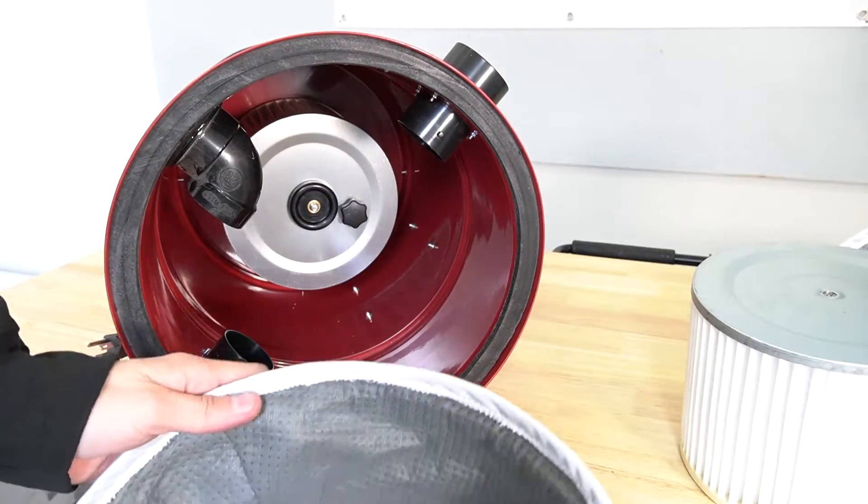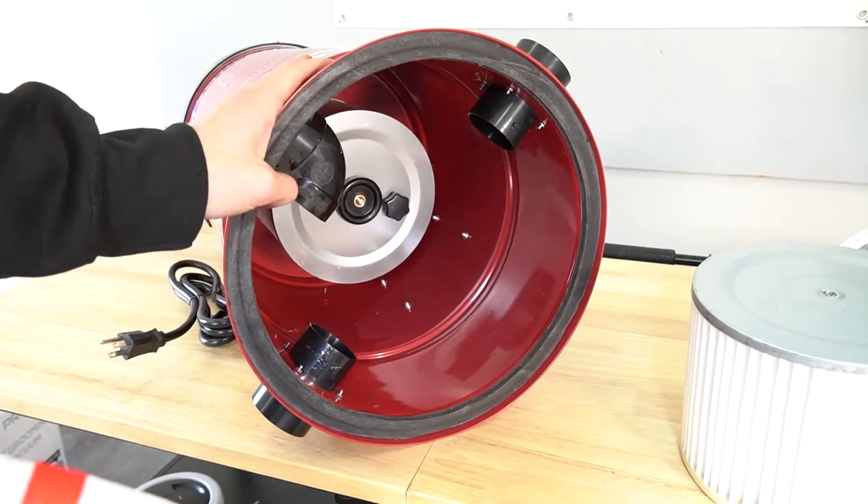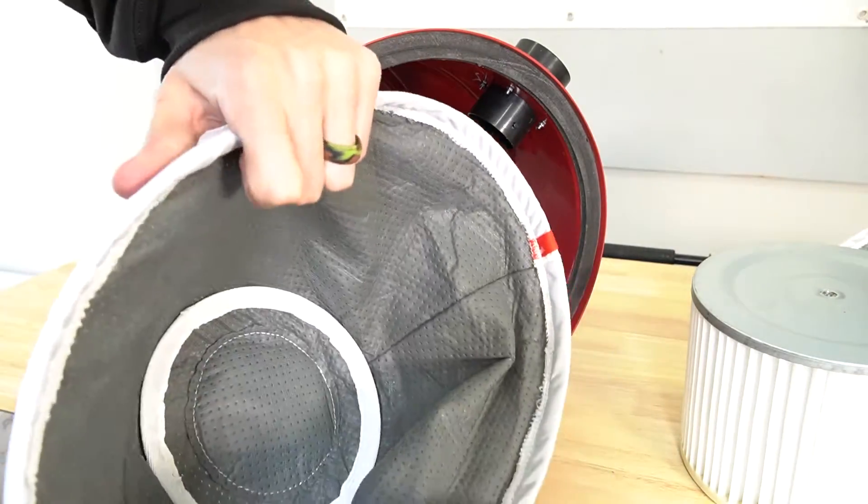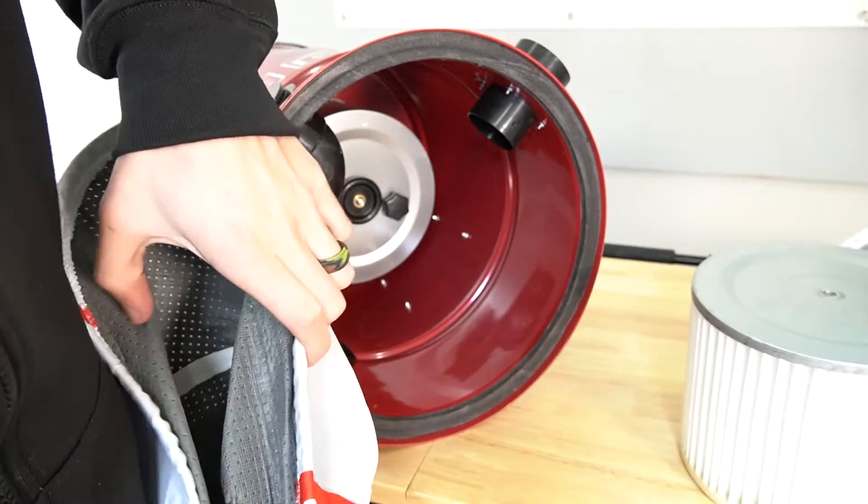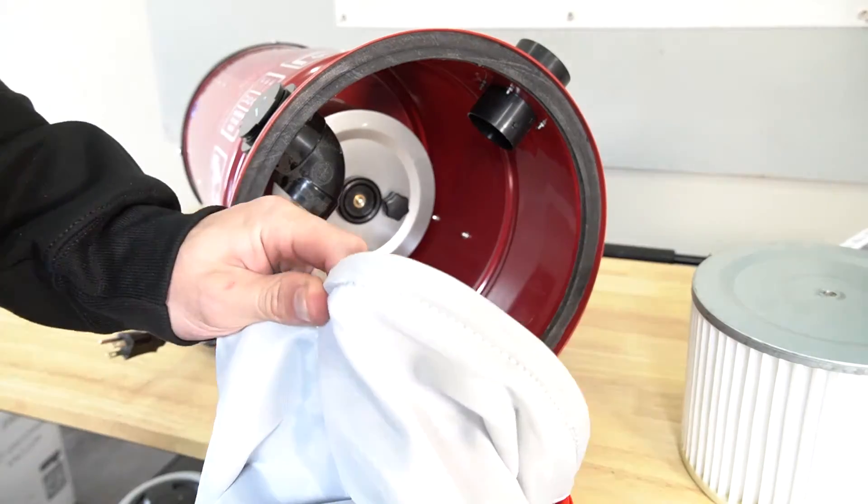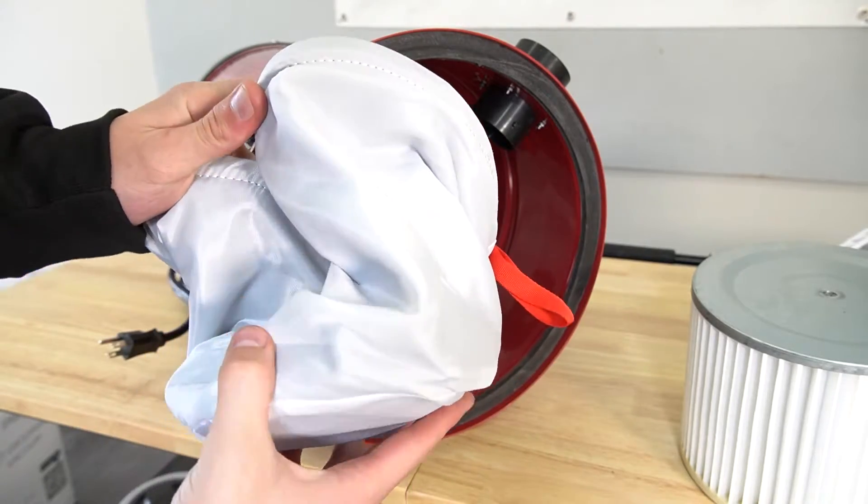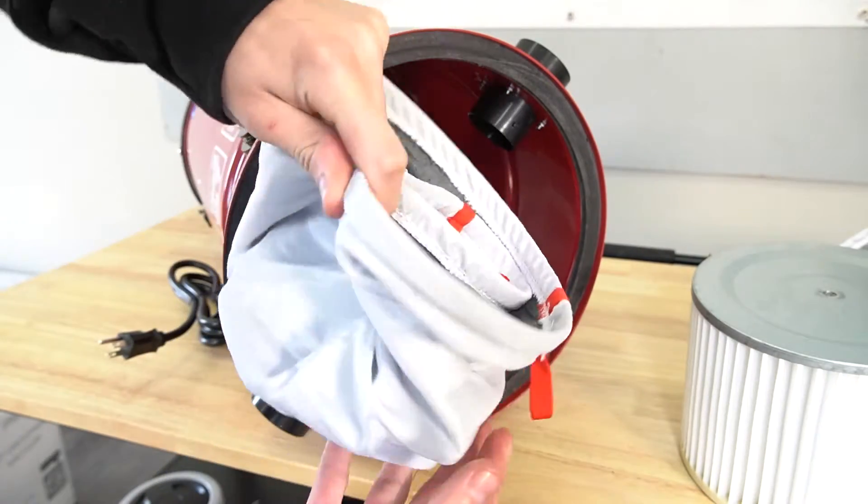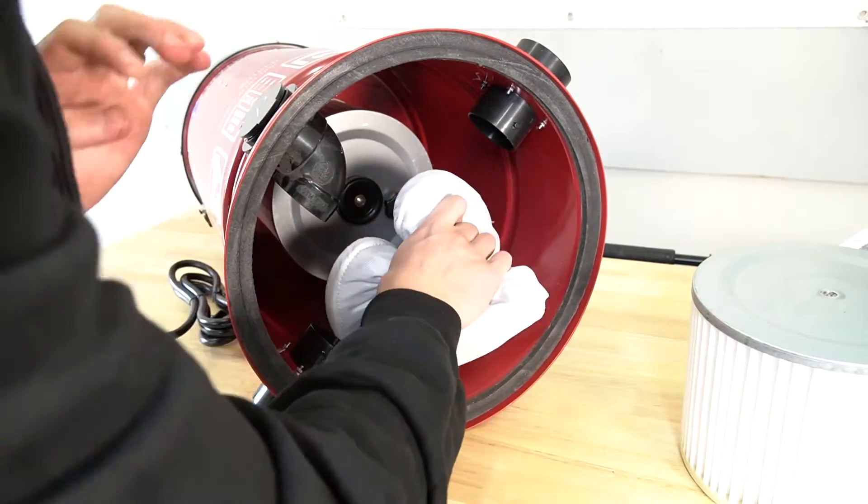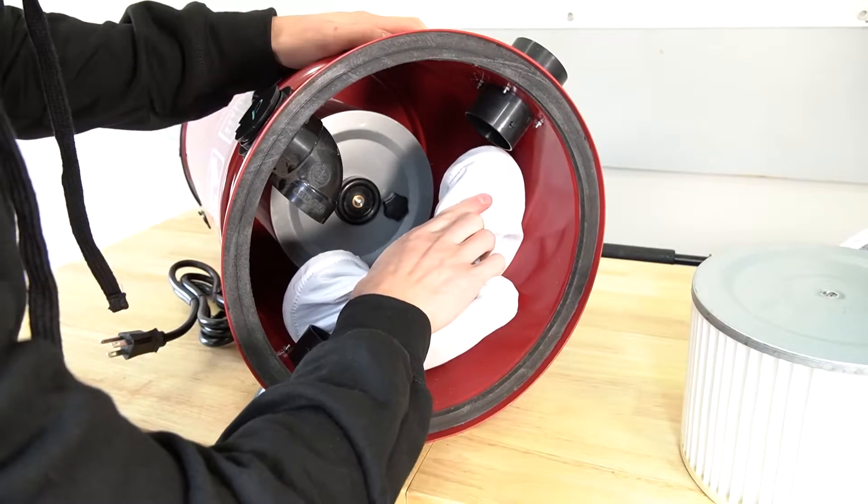Now we're going to do the cloth filter. This one is kind of tricky. Grab the filter and try to bend it like this. Make sure when you install it you only see the white part. If you see the gray part you have it in upside down. Put it in that groove.